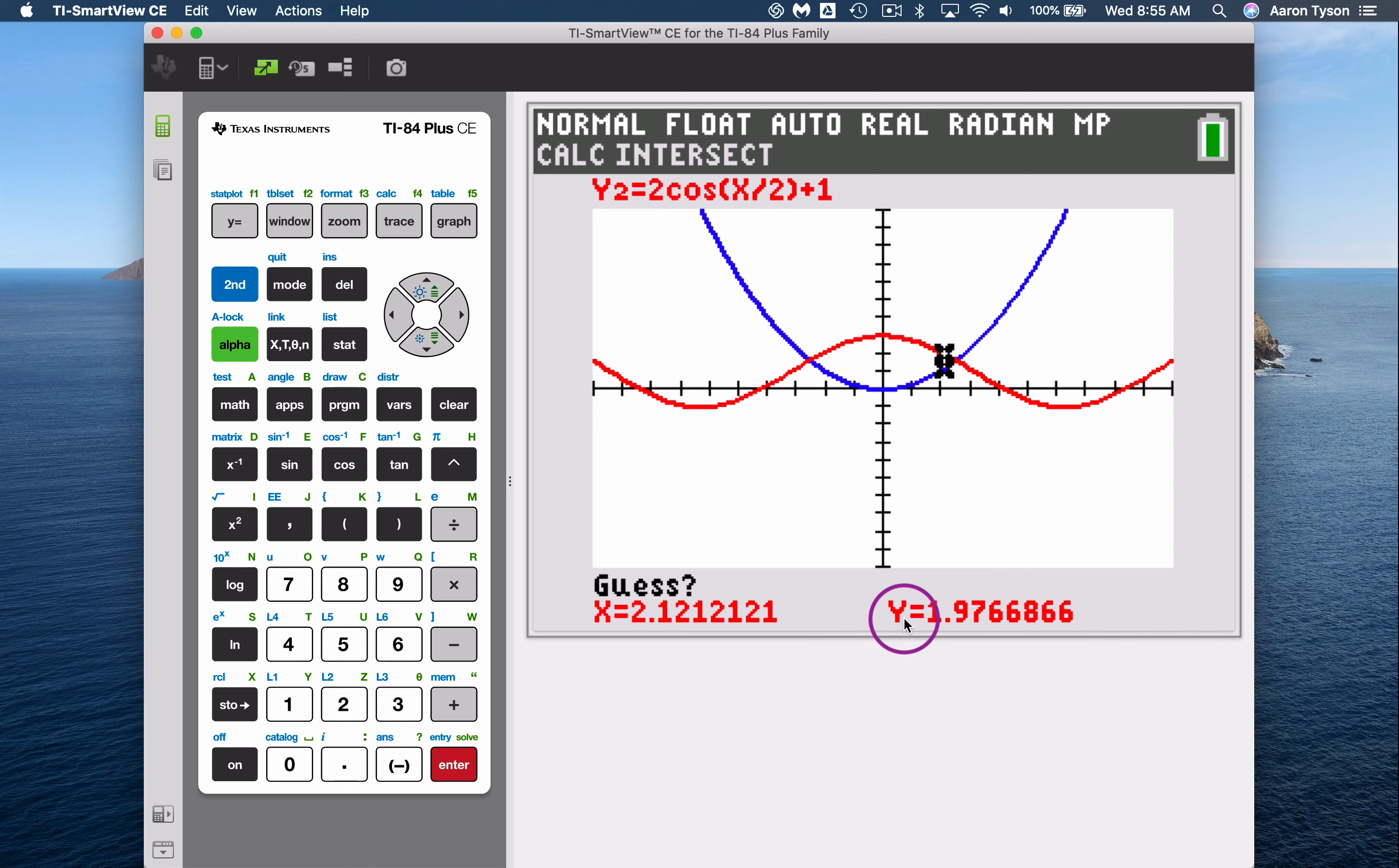Now, when it's asking you for a guess, essentially it just wants you to put your cursor as close to your point of intersection as you can, because if your graph has multiple points of intersection, you're kind of telling it where you want it to make that calculation. So somewhere around here. If I put my cursor over here, I'd calculate this point of intersection, but this is directing it to calculate that one.